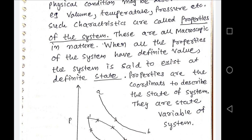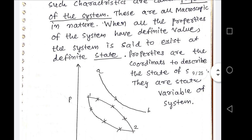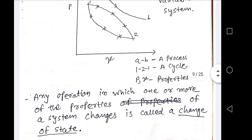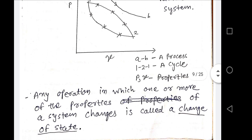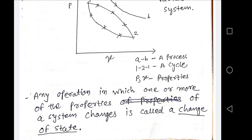Now, after some time — after 1 minute, 2 minutes, 5 minutes, or even a fraction of time — if any one property or more properties change with respect to time, then it is known as a change of state. Any operation in which one or more properties of a system changes is called a change of state.